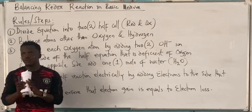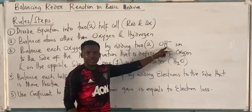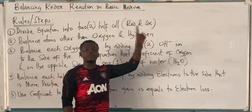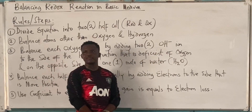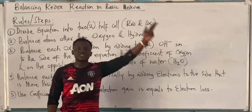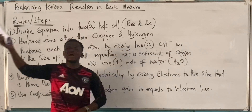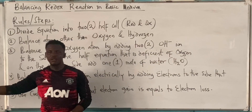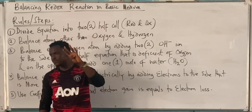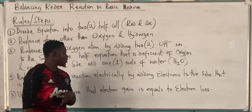It's a two-way step. Because once you add OH⁻, you have automatically introduced two hydrogens, so on the opposite side you add water. If something is lacking one oxygen, add two OH⁻ on that side and one water on the opposite side. If something is lacking two oxygens, add four OH⁻ and two water.